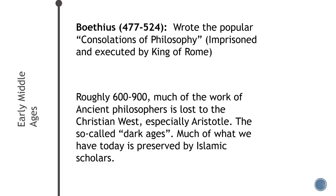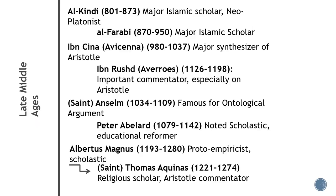Much of what we have today in terms of the writings of Aristotle, many of the dialogues of Plato, and other ancient works was preserved by Islamic scholars and then reintroduced to Europe in the later Middle Ages — a very big contribution to our modern intellectual life. This was during what historians call the Islamic Golden Age, which very much was that in terms of intellectual, scientific, and social progress. Scholars like Al-Kindi, Al-Farabi, Ibn Sina, and Ibn Rushd — known to Westerners as Avicenna and Averroes — preserved the writings of Aristotle and even expanded upon many of the ideas he had been working on.